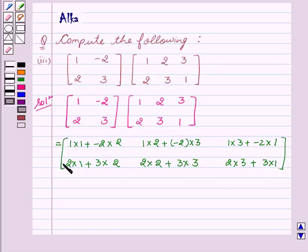This can be written as 1 minus 4, 2 minus 6, 3 minus 2. Then 2 plus 6, 4 plus 9, 6 plus 3.